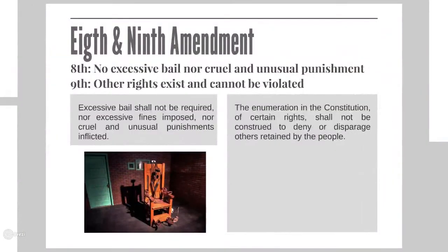The Eighth Amendment says that there is no excessive bail. That means that if you rob a bread store, you can't get charged $500 million for bail — it has to fit the punishment of the crime. And there's no cruel or unusual punishment. This is interpreted a lot in modern society. A lot of people believe that torture is cruel and unusual punishment, and therefore the United States has in the past gone against their own constitution. Others say that torture is not cruel and unusual, so this is very open to interpretation.